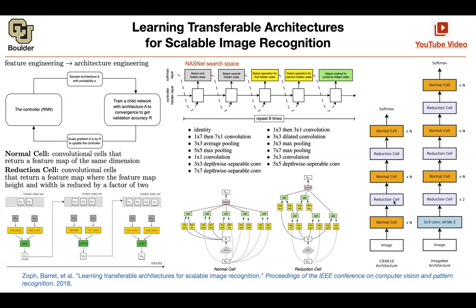If you start from the input, you only have one, so you have to do some initial operation. You take your image, push it through your normal cell - the first one is an exception. Then you have N normal cells stacked on top of each other, and each normal cell looks at the previous one and the one before it to constitute H1 and H2. You are not changing resolution within the normal cells, so you can add whenever you want. Whenever you concatenate, you follow that by a one-by-one convolution to project back to the correct dimension.